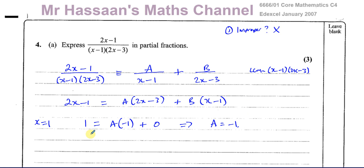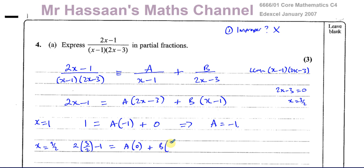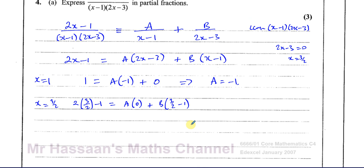To find B, we substitute whatever makes (2x minus 3) equal 0, which is x equals 3/2. Substituting x equals 3/2: 2(3/2) minus 1 equals 2, equals B times (3/2 minus 1) equals B times (1/2). So 2 equals (1/2)B, therefore B equals 4.